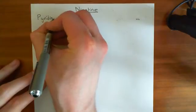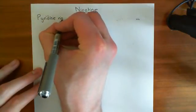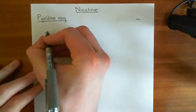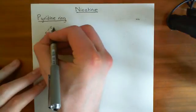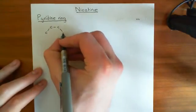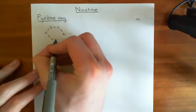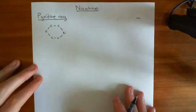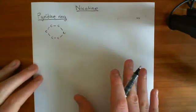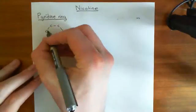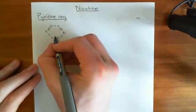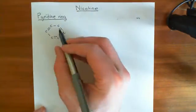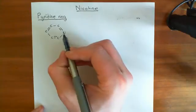A pyridine ring is a six-membered ring where five of the members are carbon atoms, and then one of the members of the ring is a nitrogen. Here are three carbons, here's the nitrogen, and here are two more carbons — five carbons with a nitrogen. Pyridine rings have alternating double and single bonds, just like a benzene structure. They are aromatic rings where, unlike benzene, one of the elements is now nitrogen.